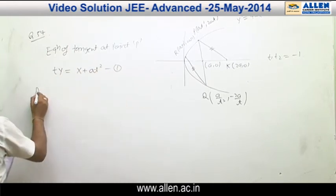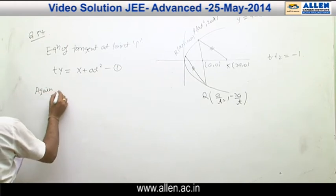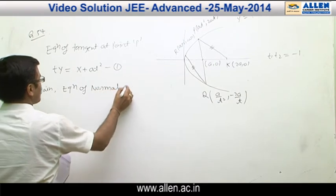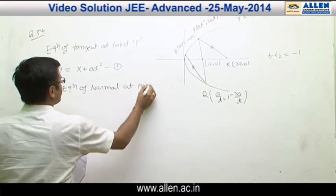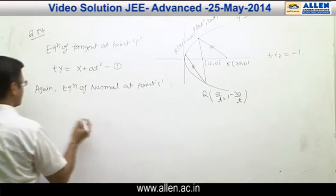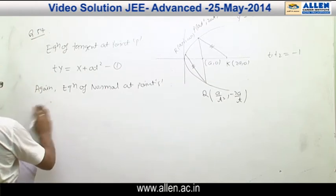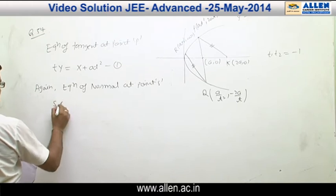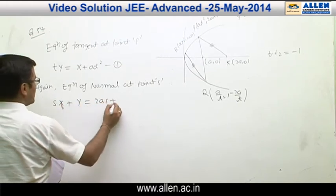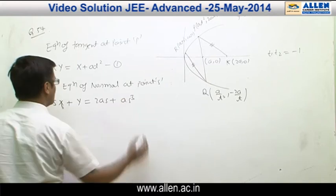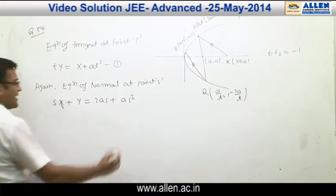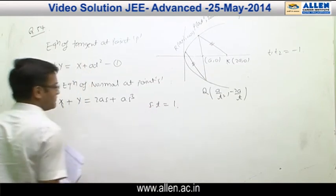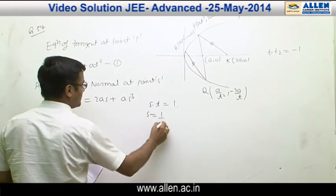The equation of the normal at point S is: Sx + y = 2As + As³. This is also the standard equation. But we are given that S × T = 1, therefore we can replace S by 1/T.